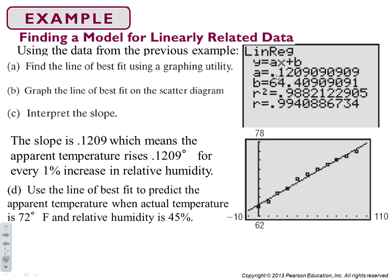And then use the line of best fit to predict the apparent temperature when the actual temperature is 70 degrees Fahrenheit and the relative humidity is 45 degrees. So plug 45 in for our x value and we get 69.8.